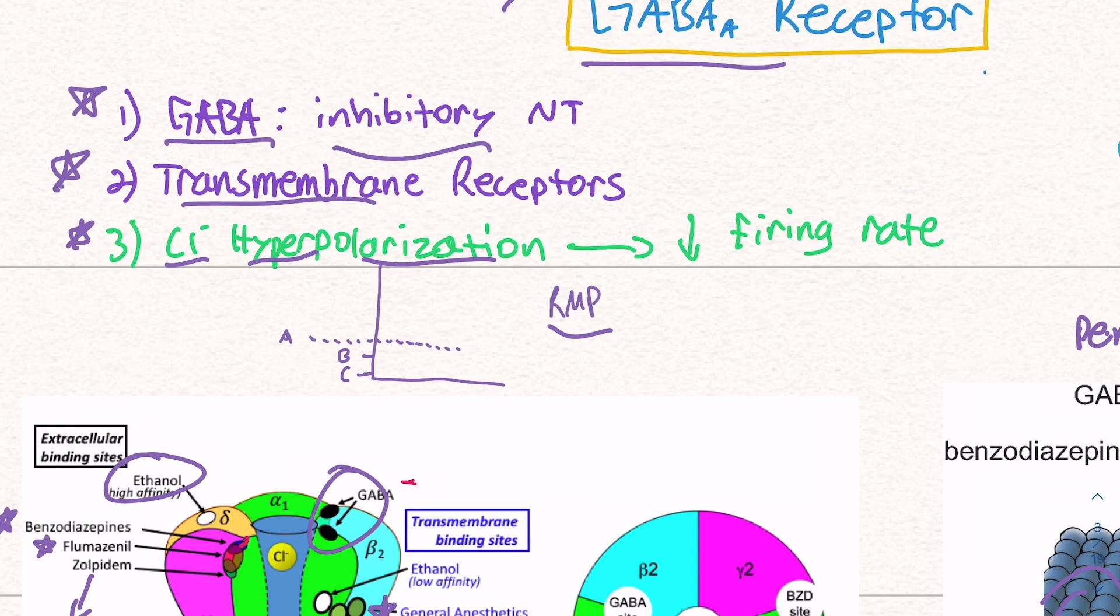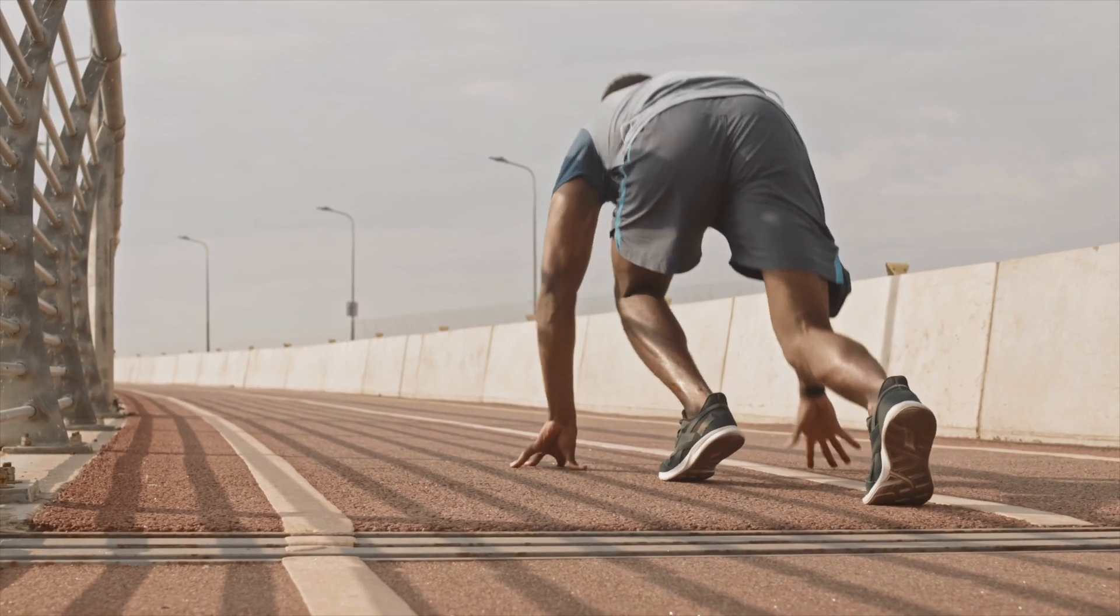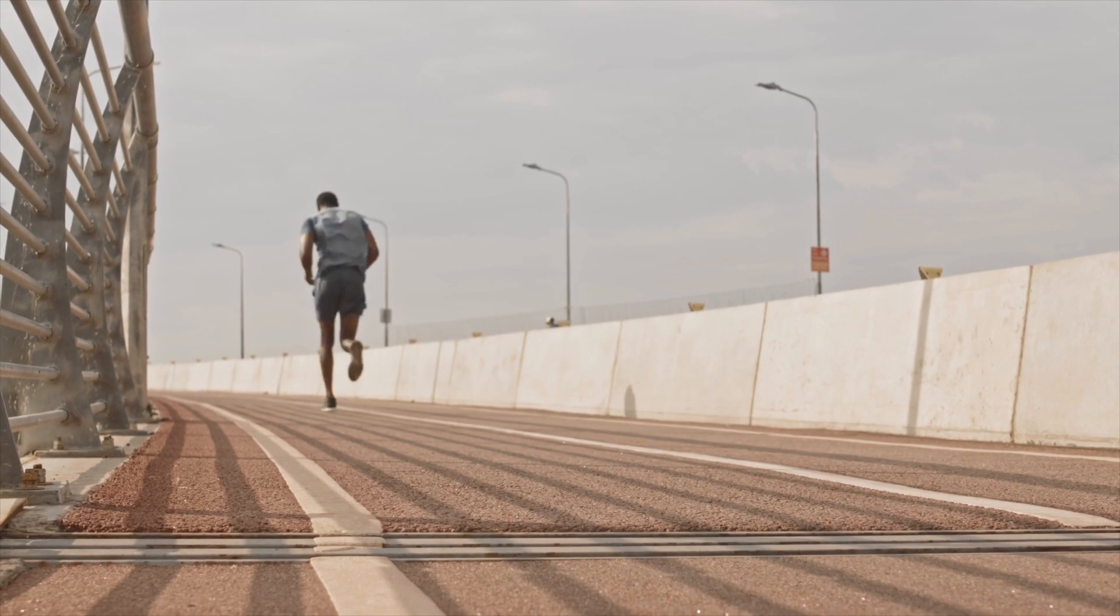Every cell has what's called a resting membrane potential. At rest, it holds a certain amount of charge, I guess you could say. When we have our neurons that fire, that firing is called an action potential. It's basically a nervous impulse that allows us to move our muscles and our heart to beat, et cetera. In order for this impulse to fire, you have to pass a certain threshold.